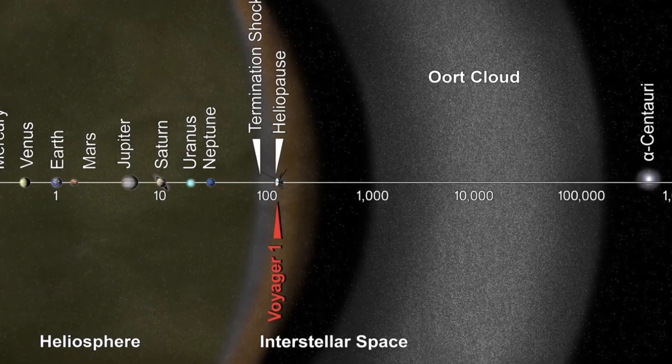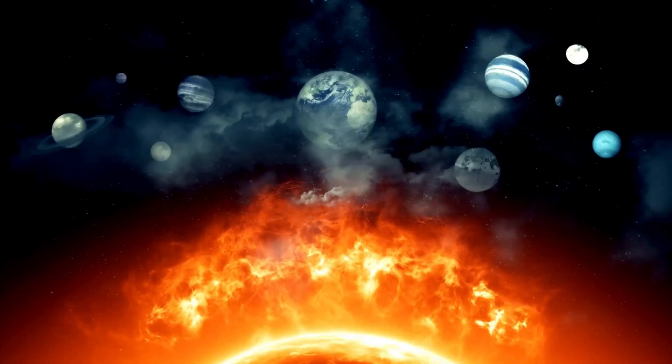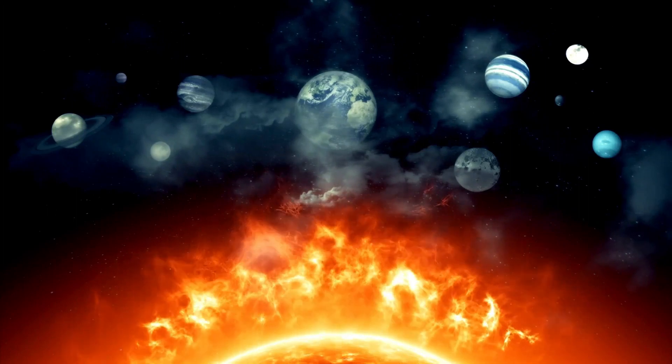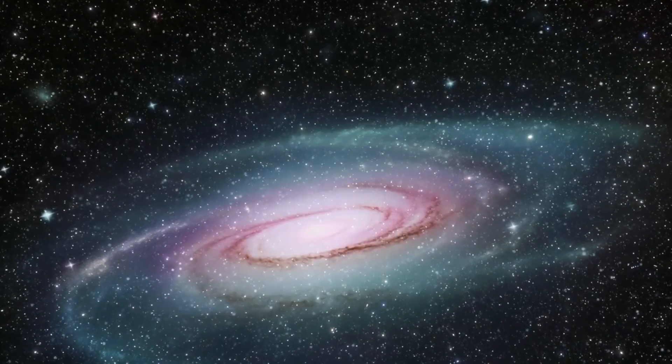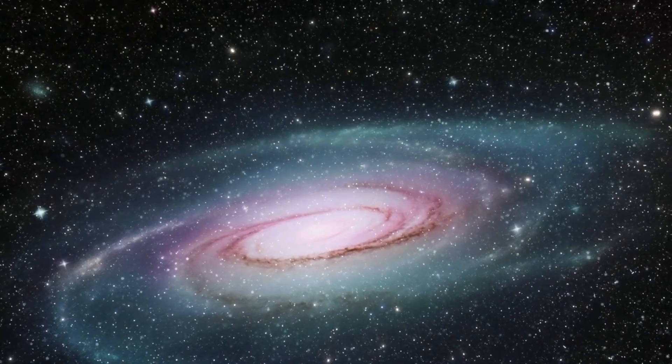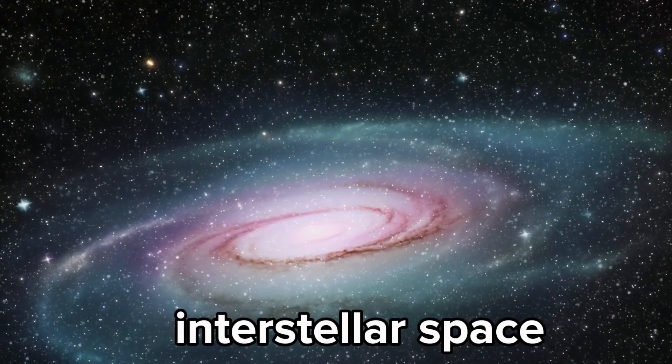Speaking of which, there's this line called the heliopause. It's like the edge of our solar system, where the Sun's influence ends and interstellar space begins. The Oort cloud is like the last stop in our cosmic neighborhood, the final frontier before we are officially in interstellar space.